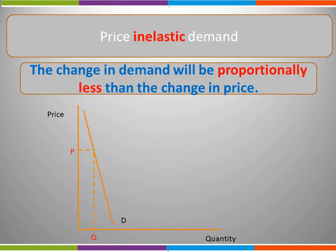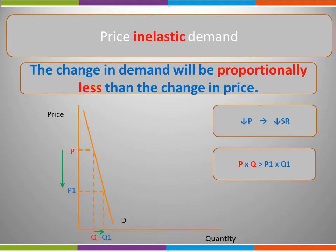If a product is price inelastic, the change in demand will be proportionally less than the change in price. This is shown by a steep demand curve. Here we can see that as the price changes from P to P1, the quantity demanded changes from Q to Q1. The change from P to P1 is much greater than the increase from Q to Q1. If a product is price inelastic, a fall in price will lead to a fall in sales revenue — we can see this on our diagram. Sales revenue is calculated as price times quantity, so P times Q is a greater area than P1 times Q1.